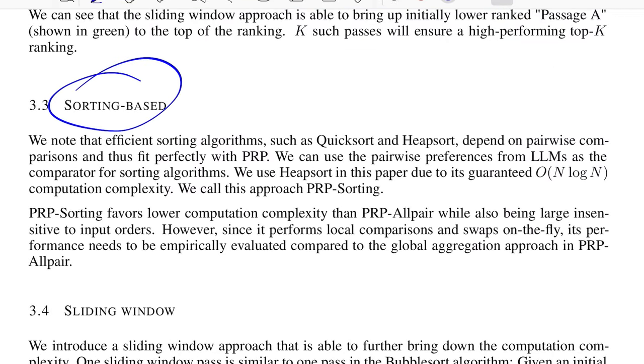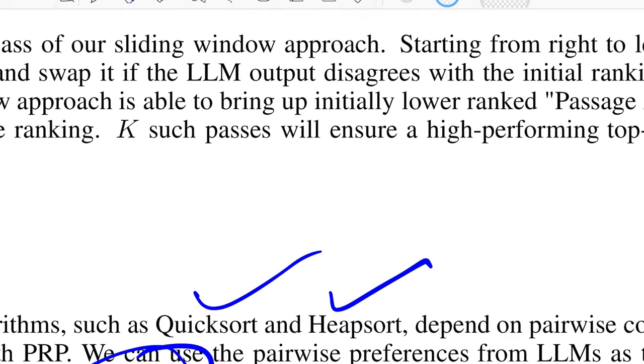The first one is sorting-based. This takes inspiration from efficient sorting algorithms like quicksort and heapsort because of the nature of doing pairwise comparison. Finally, they prefer doing heapsort because it guarantees n log n computation complexity, whereas quicksort in the worst case goes to n-squared. Let's take an example to understand what might be happening. Let's say you have a query Q and you had, let's say, five documents - D1, D2, D3, D4, and D5.